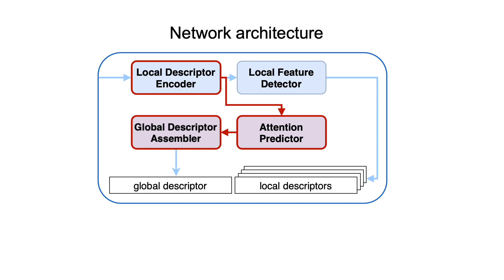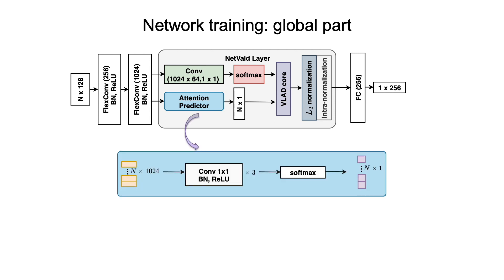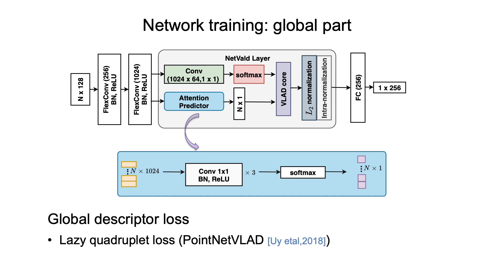As mentioned before, we propose to reuse the local descriptors for global feature assembly. For this purpose, two flex-conv layers first project the local features to a higher dimension for more retrieval-relevant encoding. The attention predictor takes these features and outputs a per-point attention map, which is followed by a NetVLAD layer to generate a compact global vector. To train the global part of the model, we use the same lazy quadruplet loss as used in PointNetVLAD.